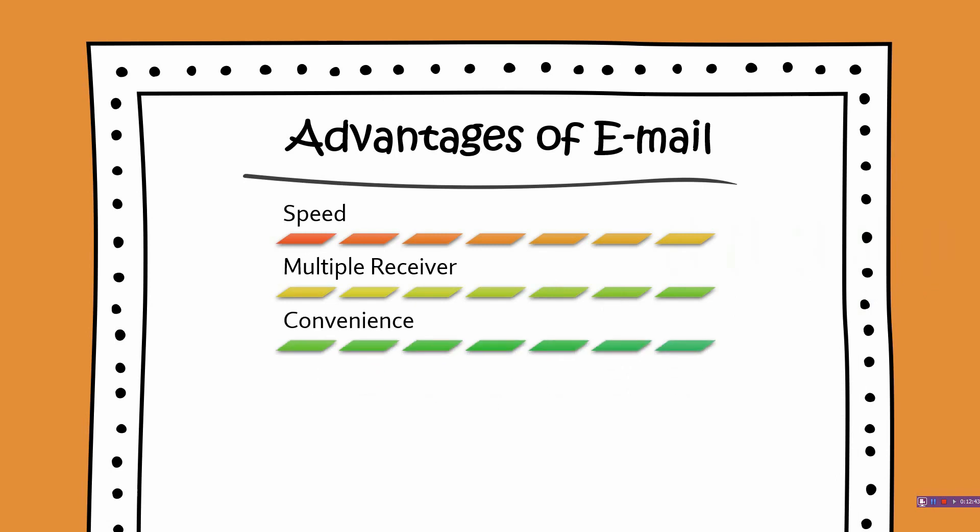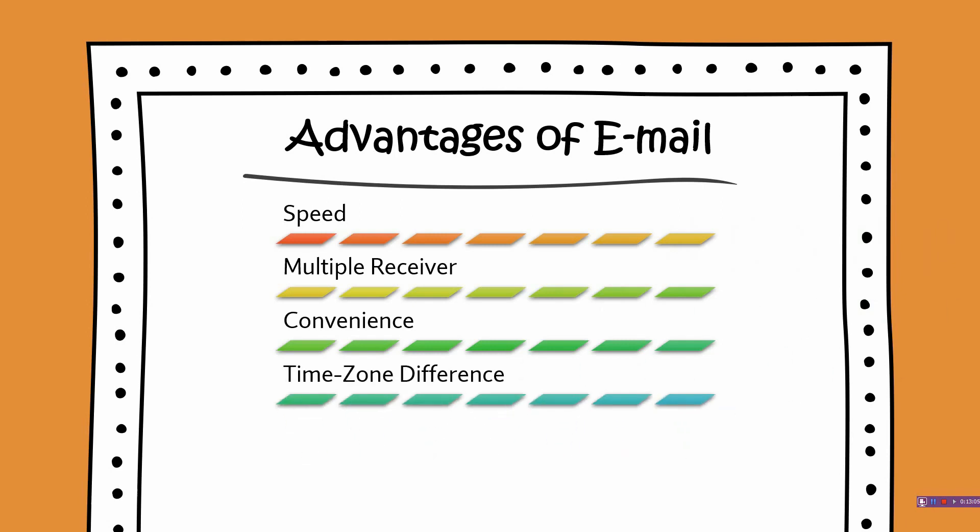Next comes convenience. Communicating through a phone call can cause inconvenience to the receiver if he is busy with other work, whereas an email reaches the receiver without disturbing him and he can read the message at ease whenever possible. Next is time zone difference. Time zone differences make it difficult to communicate with someone from the other part of the world on phone, but this is not the case with email. It can be sent at any time convenient to the sender and the receiver can check it at the start of the next working day.